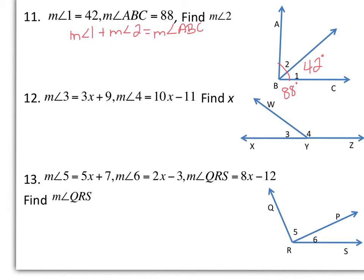So angle 1 is 42 degrees. I don't know the measure of angle 2, but I know the measure of angle ABC is 88. So if I take 88 minus 42, I get that the measure of angle 2 is 46 degrees.